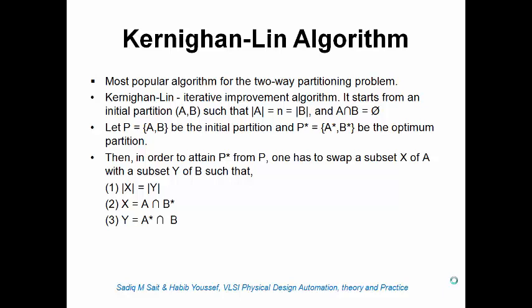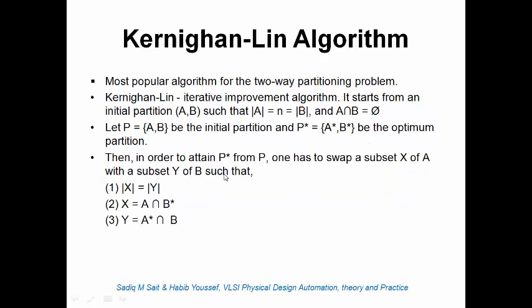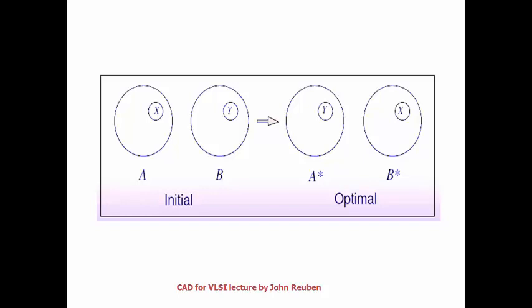This can be looked at as an optimization problem: we have an initial partition A and B, and the problem is to find a subset X of A and a subset Y of B, which when exchanged across the partition give new partitions A* and B* such that the cut set is minimized. One has to swap a subset X belonging to A with subset Y belonging to B, such that the swapped subsets are of the same size, and X and Y are defined as A∩B* and A*∩B.